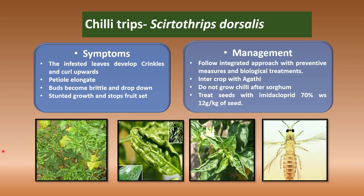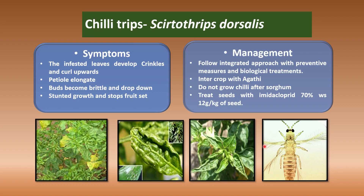For management of thrips, we should follow the integrated approach with preventive measures and biological treatment. Intercrop with agathi and do not grow chili crop after sorghum. Treat the seeds with imidacloprid 70% wettable sulfur at 12 grams per kg of seed. In the nymph stage, thrips are small and linear with a straw yellow color and fringed abdomen. Adults have fringe wings — these are the identifications of the pest.